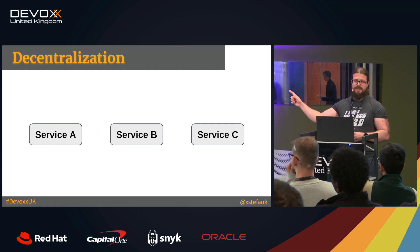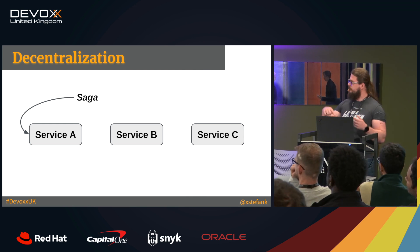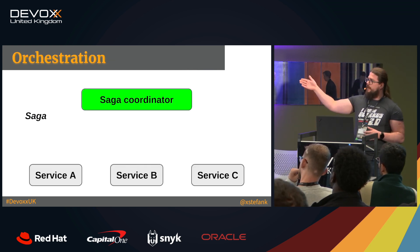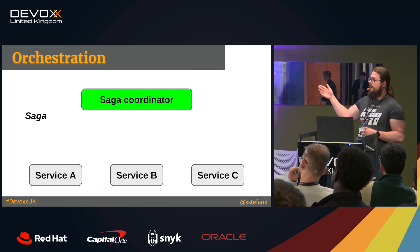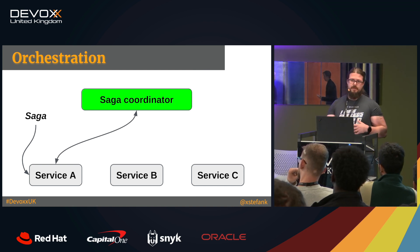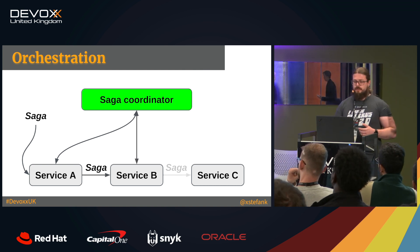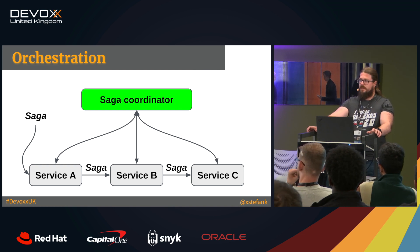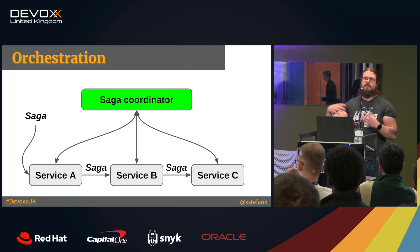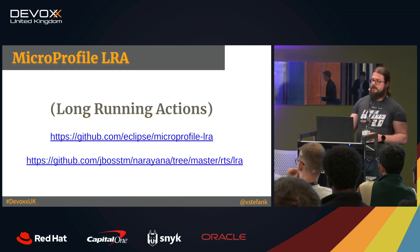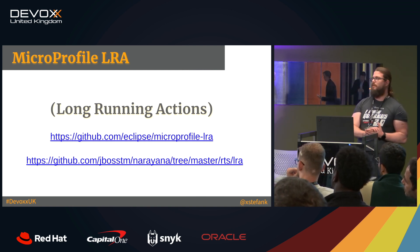There are two ways to implement this. The first is choreography, which is what I was showing — the Saga is self-contained and travels between individual microservices. The second is orchestration, where we have a Saga orchestrator or coordinator that acts as a registration service for individual participants. Each participant, when it knows it needs to participate in a Saga, enlists itself with the coordinator. Some papers suggest that if you have more than five services, choreography can be hard to maintain. In our implementation, I decided to use orchestration with a coordinator.